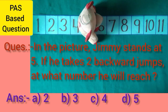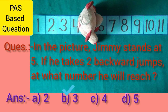Now the pass-paste question. The question is: in this picture, Jimmy stands at 5. If he takes two backward jumps, at what number will he reach? There are four answers: A is 2, B is 3, C is 4, D is 5. When Jimmy takes two backward jumps from 5, he reaches at the number 3. So the answer is B.